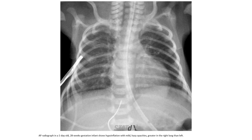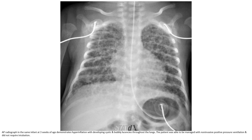This is the AP chest radiograph in a one-day-old 28-week gestation infant, showing hypoinflation with hazy opacity greater in the right lung than left. Again, this is the AP chest radiograph of the same infant at three weeks of age, demonstrating hypoinflation with developing cystic and bubbly lucencies throughout the lung. The patient was managed with non-invasive positive pressure ventilation and did not require intubation.